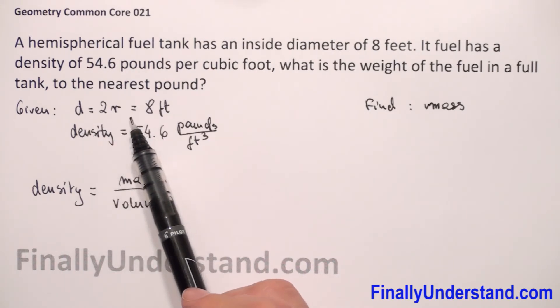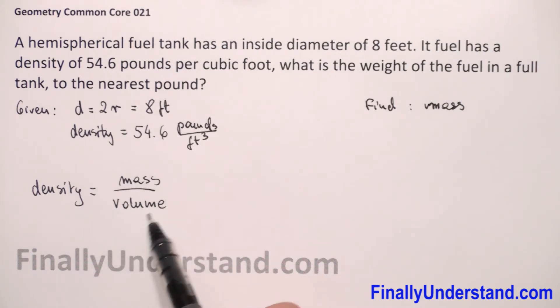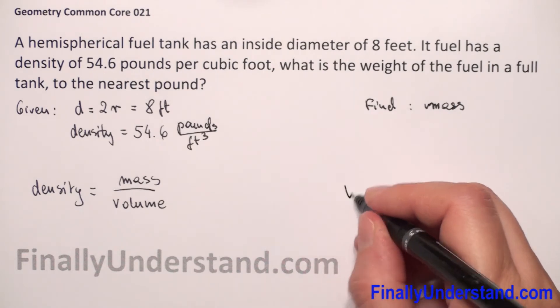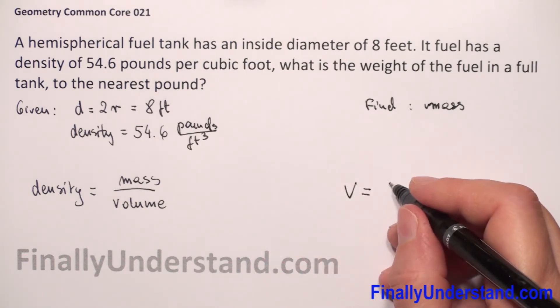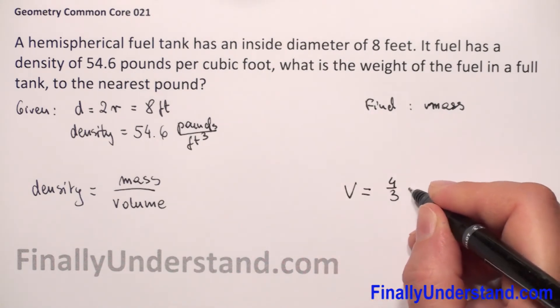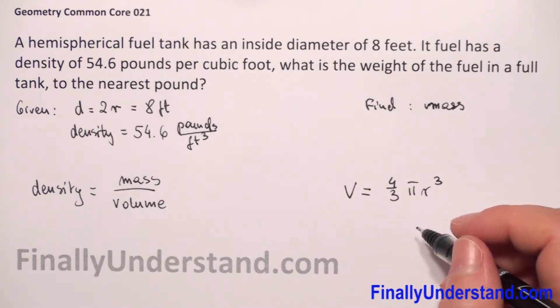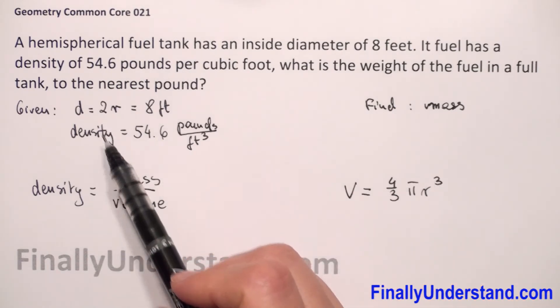First we will calculate the volume of our sphere. The formula for volume is 4 over 3 pi R cubed. We need to find R because we're given the diameter.